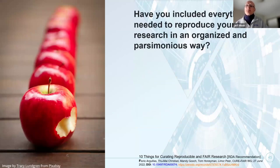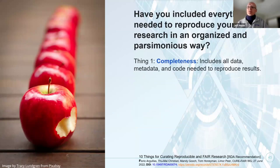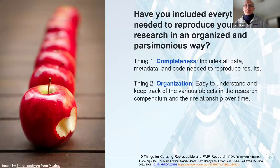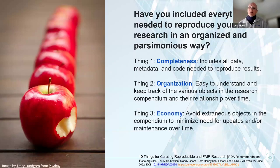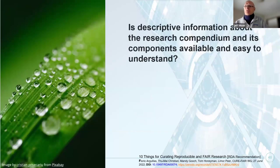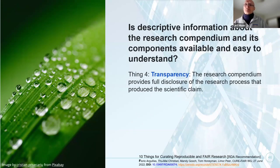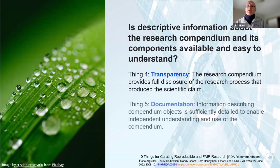Let's look at these 10 things. The first grouping asks: does the research compendium contain everything needed to reproduce a predefined outcome in an organized and parsimonious way? This covers: completeness — the compendium contains all objects needed to reproduce a predefined outcome; organization — it is easy for a secondary user to understand and track the various objects and their relationships over time; and economy — fewer extraneous objects mean fewer things that can break and require maintenance.